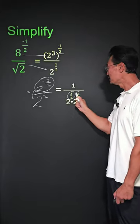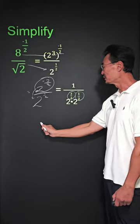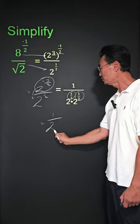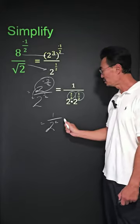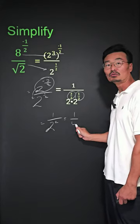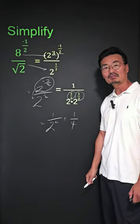And we're going to add the exponents here, where we get 1 over 2 squared. And if we simplify that, we get 1 over 4 as our final answer.